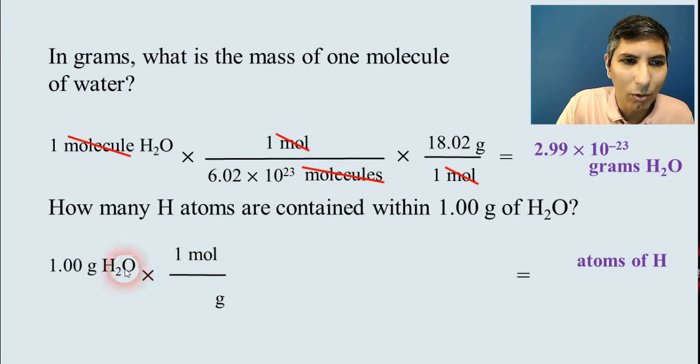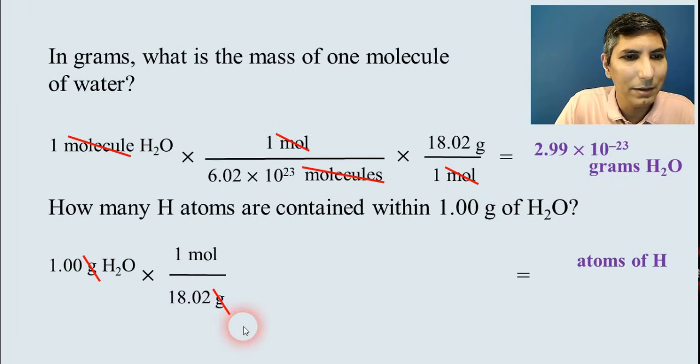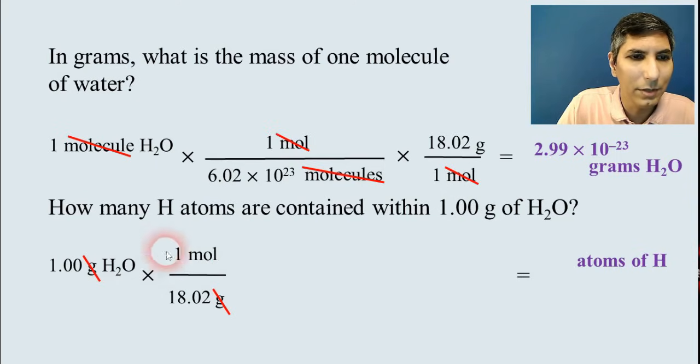So grams will go on the bottom and one mole on top. How many grams are in a mole of that compound? Well, we just used it in the last problem, didn't we? 18.02. So we have that. Grams are out. And now we're in moles of water. What do we convert to next?